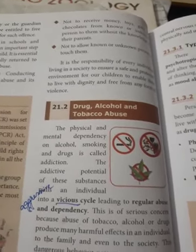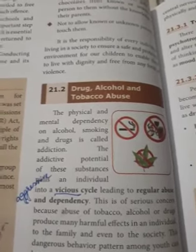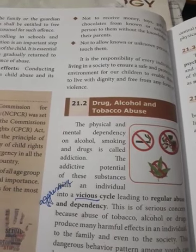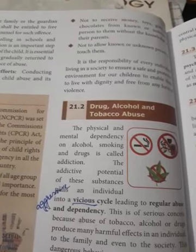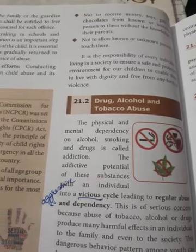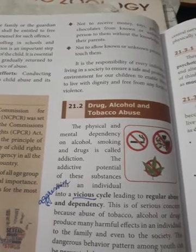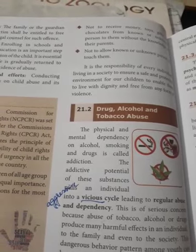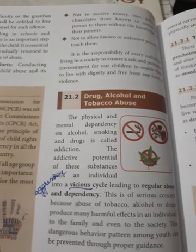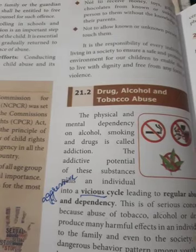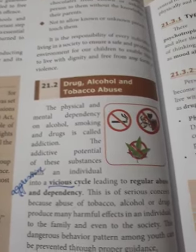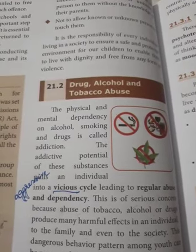The word 'abuse' means misusing. Misusing of these substances may lead to dependency or addiction. Drugs, alcohol, and tobacco affect the physical and mental condition of a person, and the person will gradually become dependent on these substances. When physical and mental dependency on alcohol, smoking, and drugs takes place, it is called addiction. The addictive potential of these substances pulls an individual into a vicious cycle leading to regular abuse and dependency.